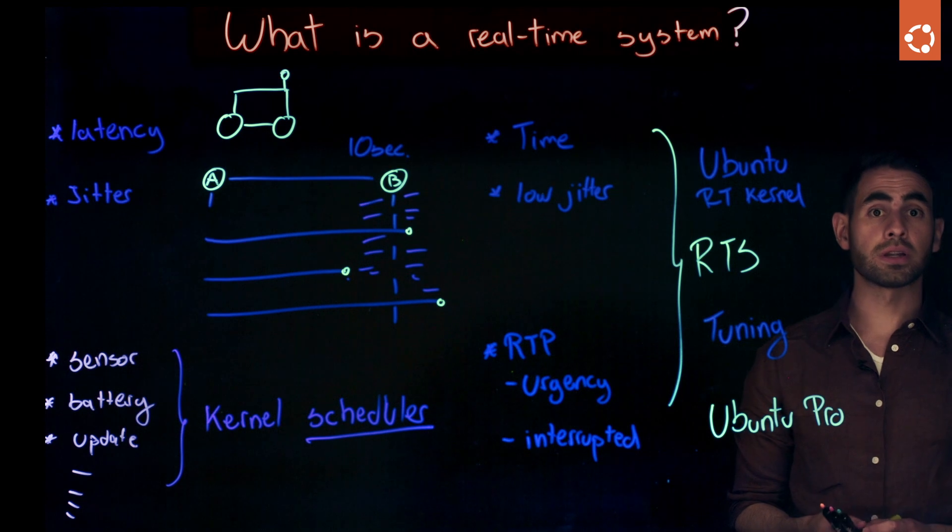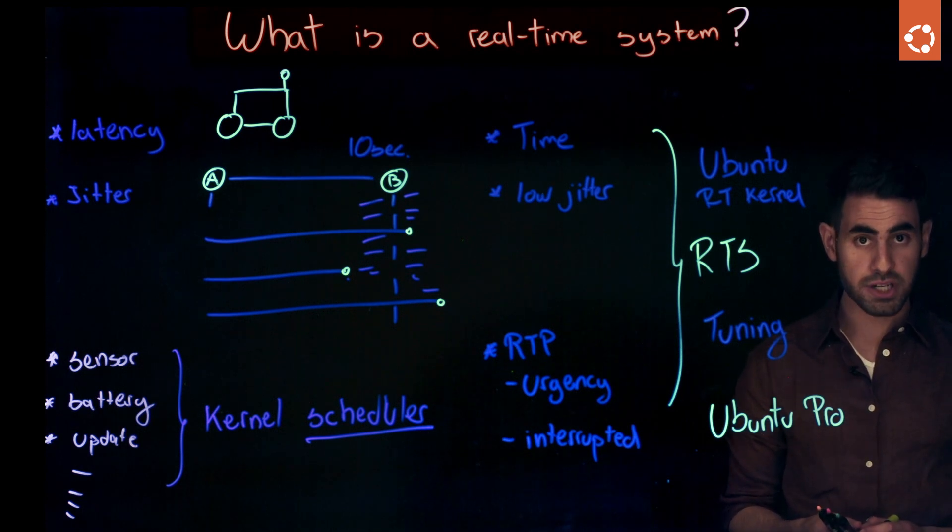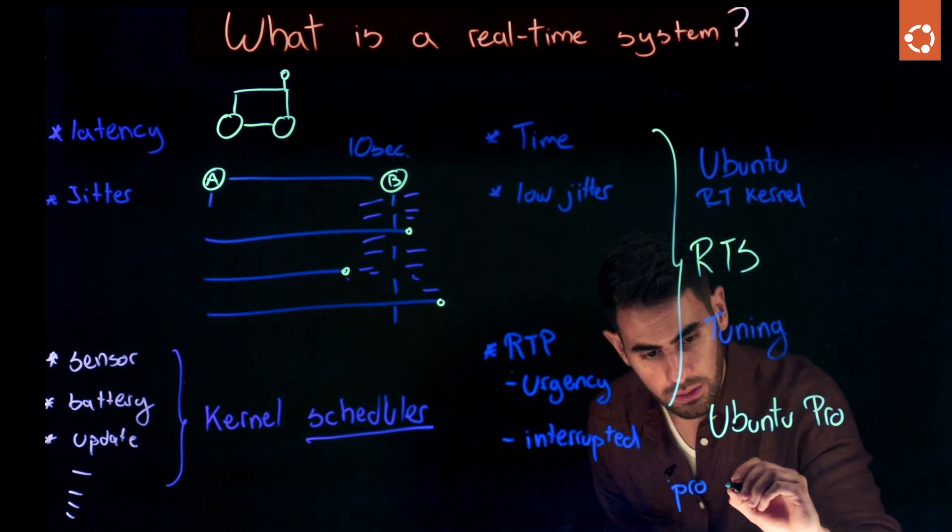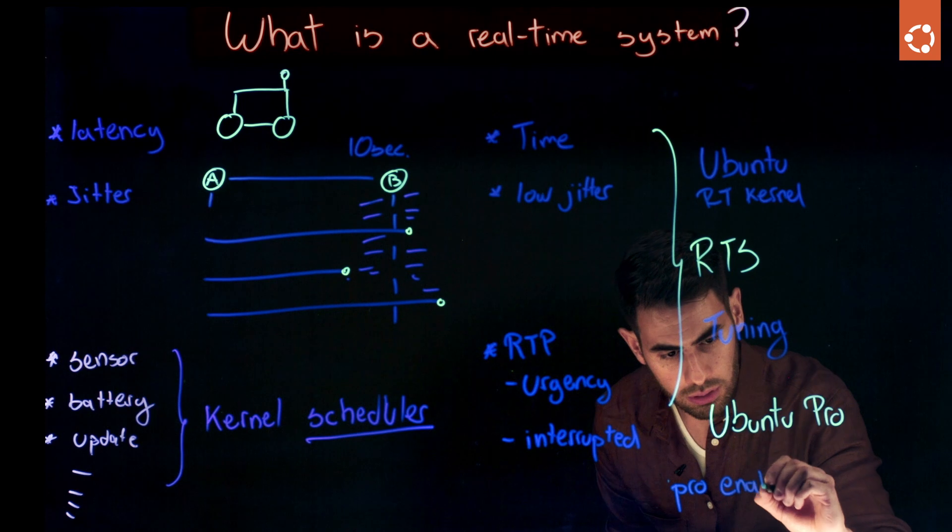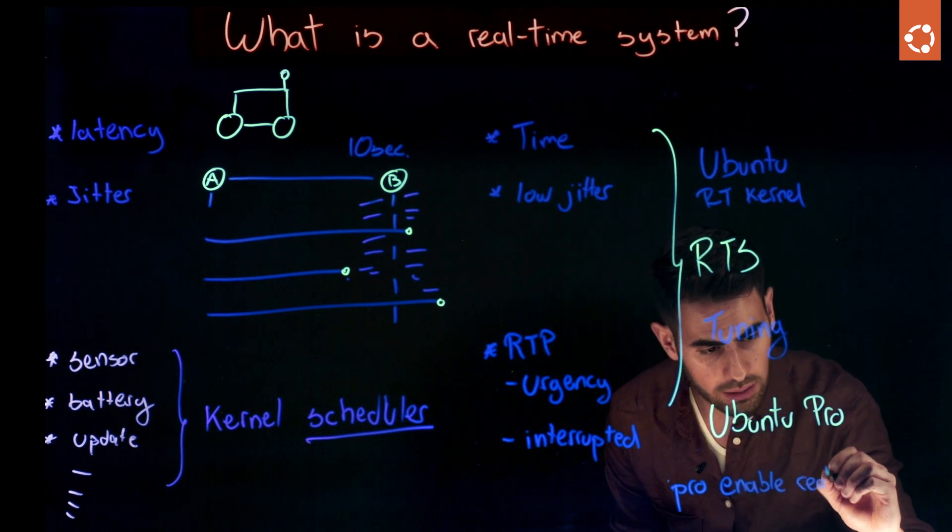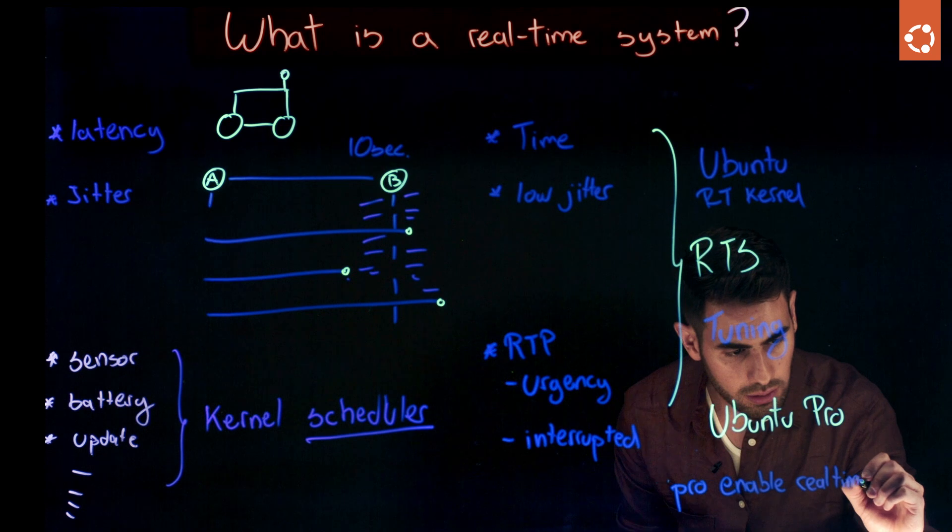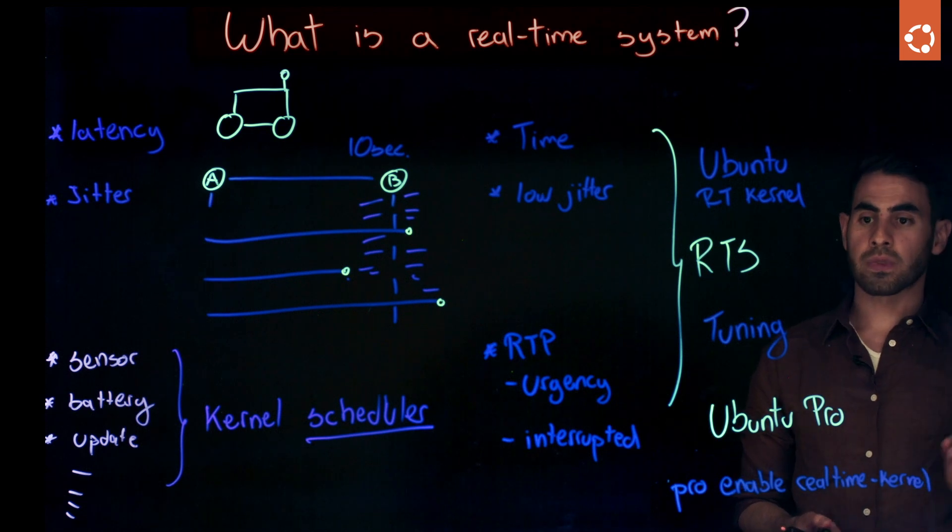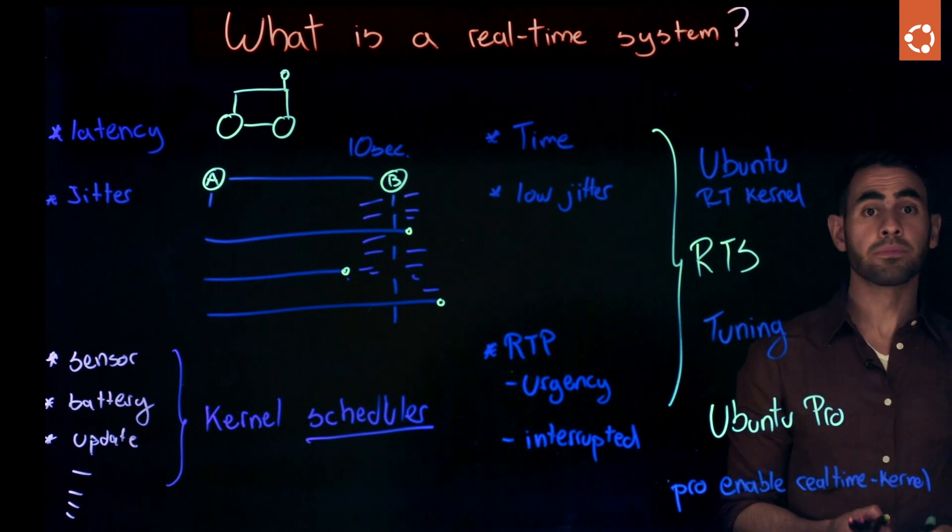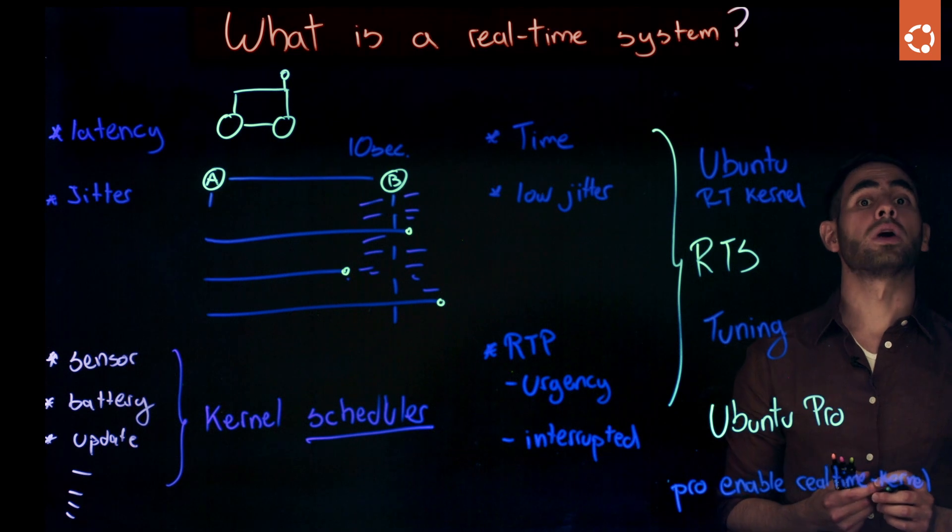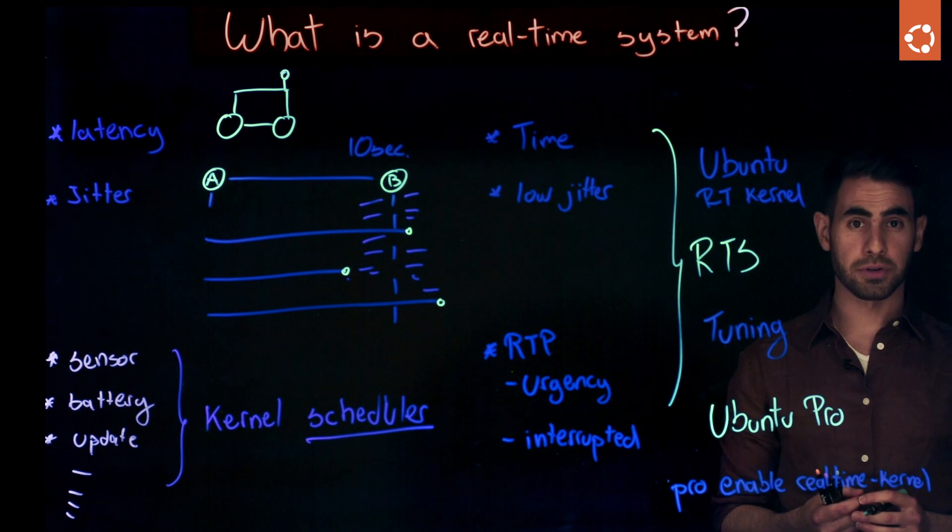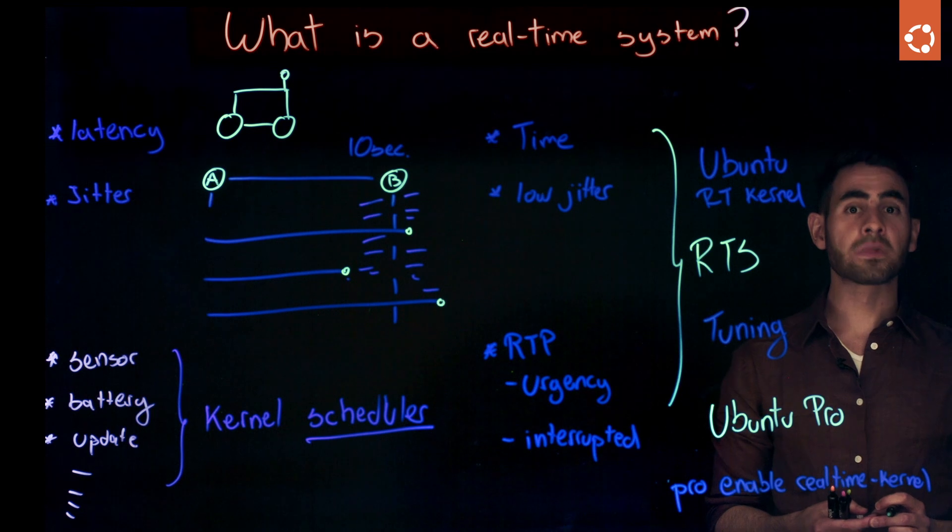Once you have registered, you will get a token that you will need to enable in your machine. After that, simply run pro enable real-time kernel. And that's all you need. After that, you will need to tune it. This can be a challenging process. That's why Canonical's kernel team has developed different resources to help you in this journey. We look forward to see what you build with this new tool. Thank you for watching.